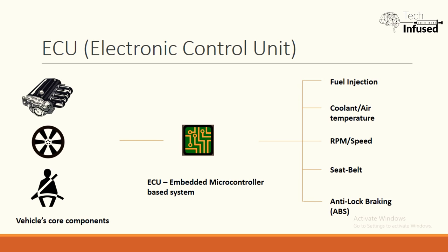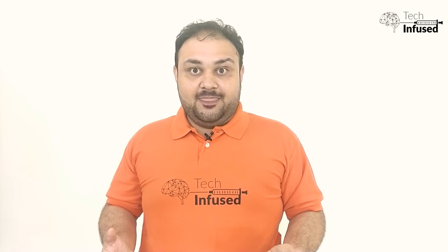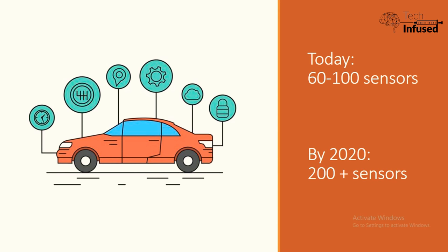The ECU constantly keeps collecting information related to the entire operations of the vehicle. Some examples include fuel injection, temperature of the coolant or air, RPM of the engine, speed of the vehicle, whether the seat belt is attached, the anti-lock braking system, and many more. You will be surprised to know that there are around 60 to 100 sensors constantly capturing information about various components inside your vehicle today.